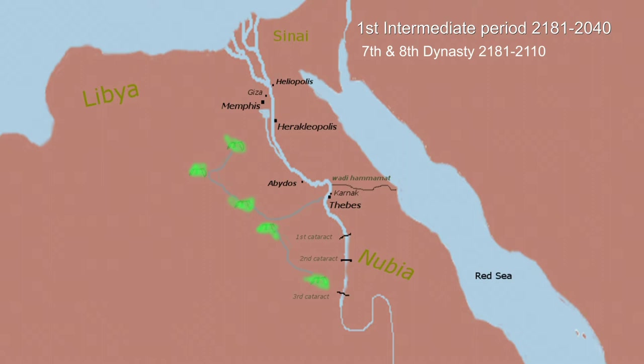Perhaps it was a strategic move, or Heracleopolis became the power center because of religious reasons, or because it was actually on the route of trade, which prevented Thebes from becoming the power of Egypt because Heracleopolis controlled the trade in and out of Thebes from the north, which would have cut their abilities to generate wealth down quite a bit.